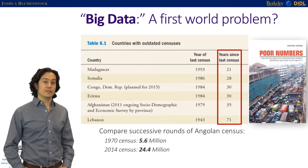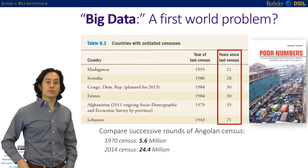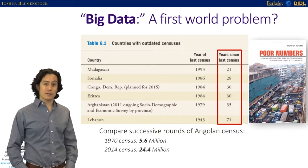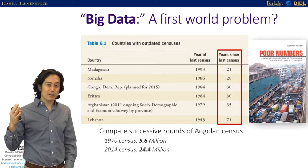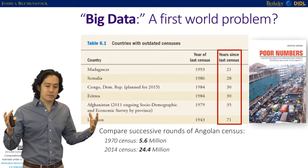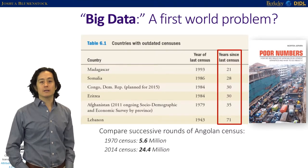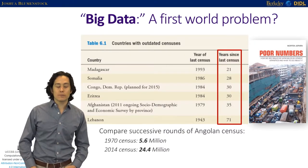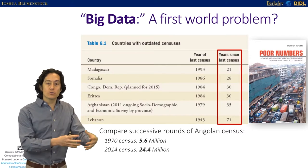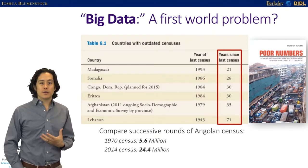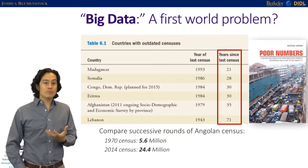Angola last did a census in 2014, measuring the population at about 25 million. Prior to that, the most recent census had been in 1970, when the population was 5.6 million — a growth of something like 350 percent. Not to mention there was a devastating civil war and mass internal migration. Put yourself in the shoes of a policy maker trying to figure out where to allocate resources, build roads, put schools, or send health workers — if your information is based on a population of 5.6 million instead of 24.4 million, you're going to be in serious trouble.